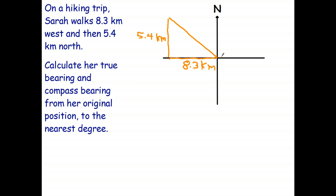Calculate her true bearing. There's my right angle but I put that in. Calculate her true bearing and compass bearing from her original position which was there to the nearest degree. So obviously in this case I'm looking for an angle. So that's the unknown angle. So to get the true bearing or the compass bearing I first have to find the angle that I can use that to answer the question.